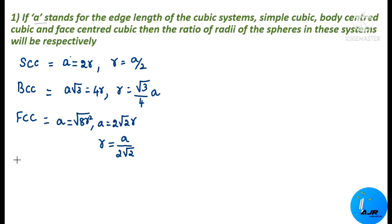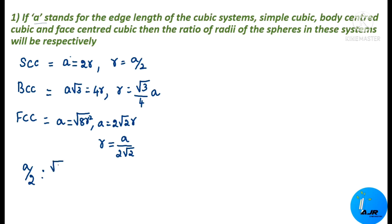Now the next thing we need is the ratio of radii. The question asks how to find the ratio of radii of the spheres in these systems. For simple cubic, the radius value is A/2. For body centered cubic, it is (√3/4) × A. And for face centered cubic, it is A/(2√2). So this is how we find the answer.